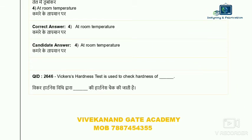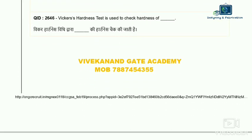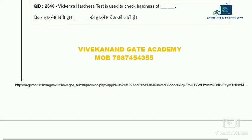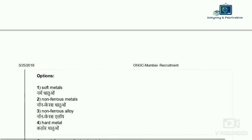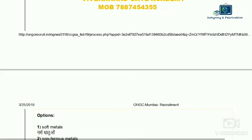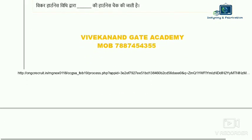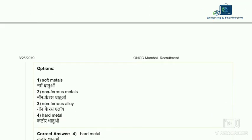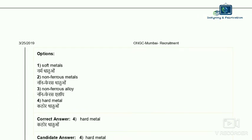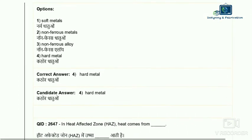Question 46: Vickers hardness test is used to check the hardness of which metals? The Vickers hardness test is used for hard metals, non-ferrous metals, non-ferrous alloys. Brinell hardness uses steel balls and is used for soft metals. So the Vickers test — option four — is used for hard metals and is the correct answer.